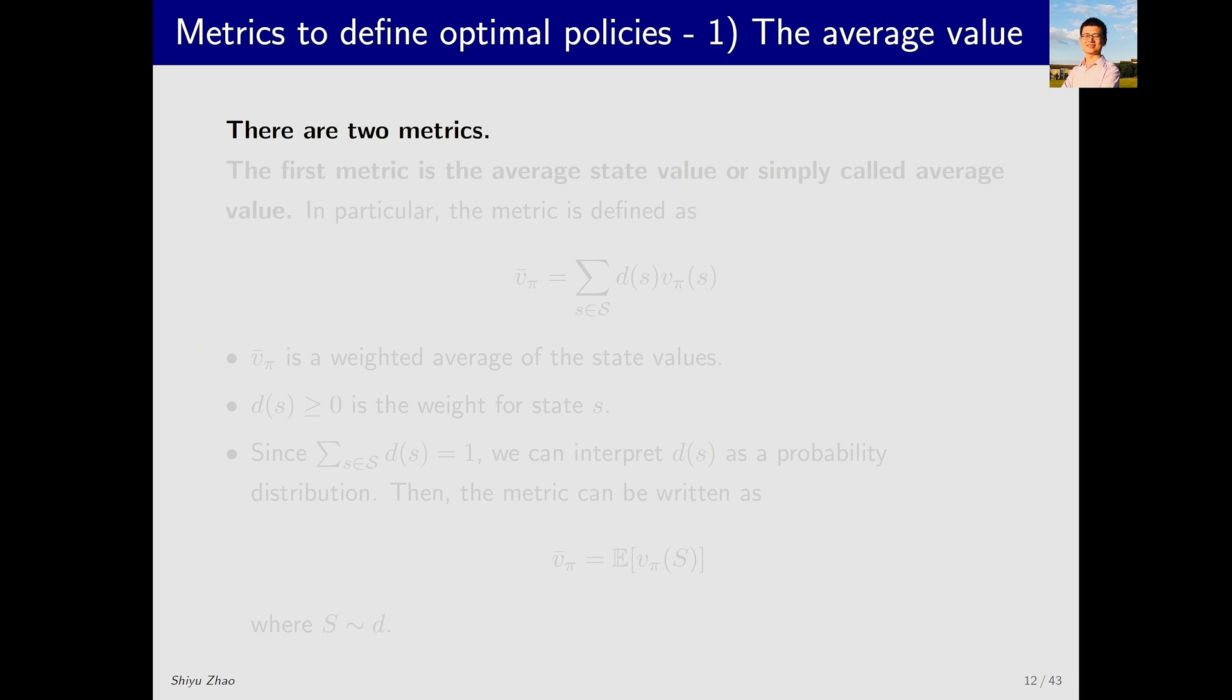Let's first look at the metrics. This section has a lot of content. No worries. We will go through it step by step. When reading books or papers, you will often come across two types of metrics. The first type is called the average state value or simply average value. What is it?